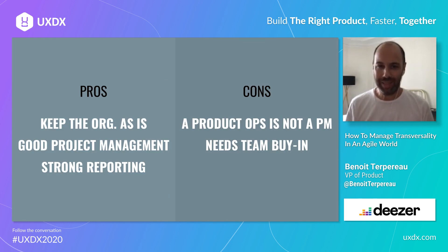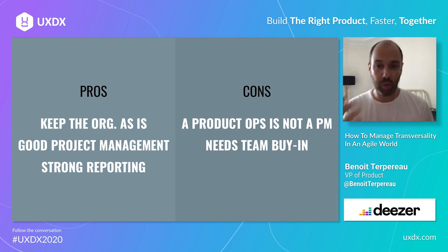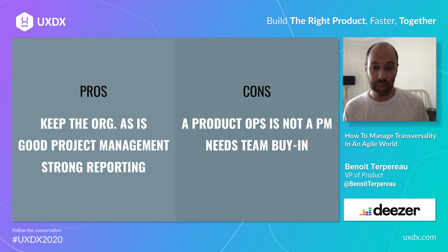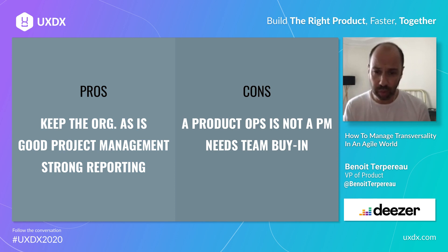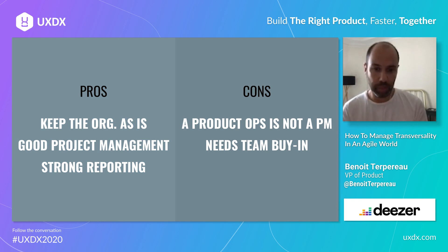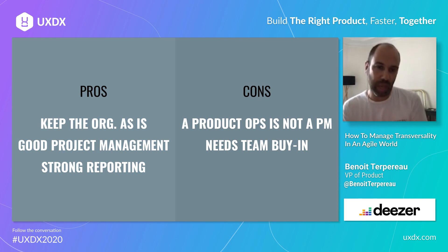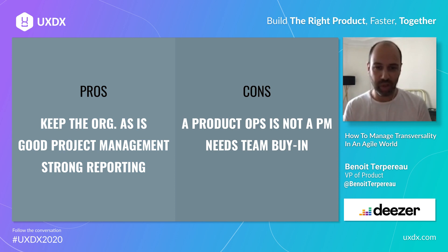On the pros: you can keep your org as-is, you won't burn or overwhelm any PM, and you'll benefit from strong project management with product ops — which is especially good for complex projects. Reporting is strong because it's at the core of a product ops skillset. On the cons: a product ops is not a PM, meaning if there's discovery to do, they won't do it well — so you'll need to pair them with a PM. Also, you'll need some buy-in from teams that may be reluctant to welcome a transversal project manager into their scope — the same way they don't like a PM playing with their backlog, they won't welcome a product ops either. So you'll need to do some education about this role.